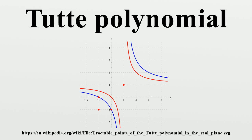Tutte also defined a closer two-variable generalization of the chromatic polynomial: the dichromatic polynomial of a graph, where k(A) is the number of connected components of the spanning subgraph. This is related to the corank-nullity polynomial. The dichromatic polynomial does not generalize to matroids because k is not a matroid property — different graphs with the same matroid can have different numbers of connected components.